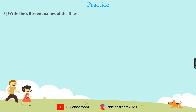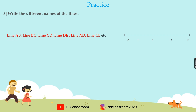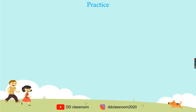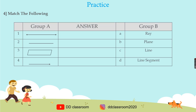Question three: Write the different names of the lines. The answer is line AB, line BC, line CD, line DE, line AD, line C, etc. Question four: Match the following. We have group A and group B. The first image matches line. The second image matches line segment. The third matches plane. The fourth matches ray.